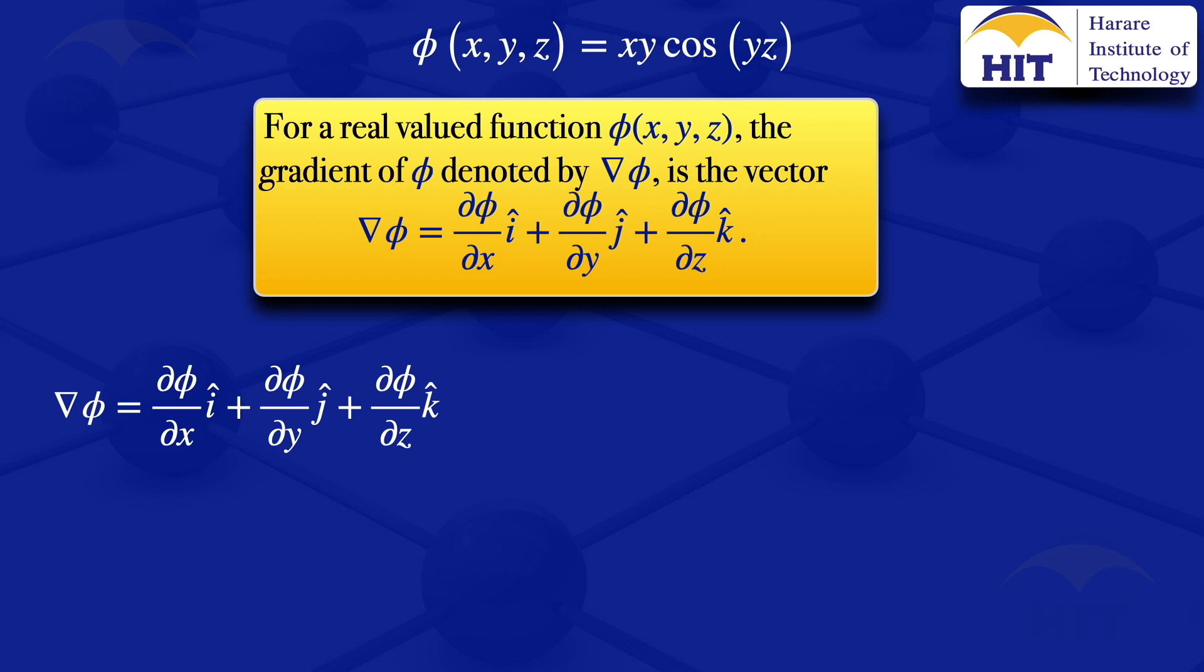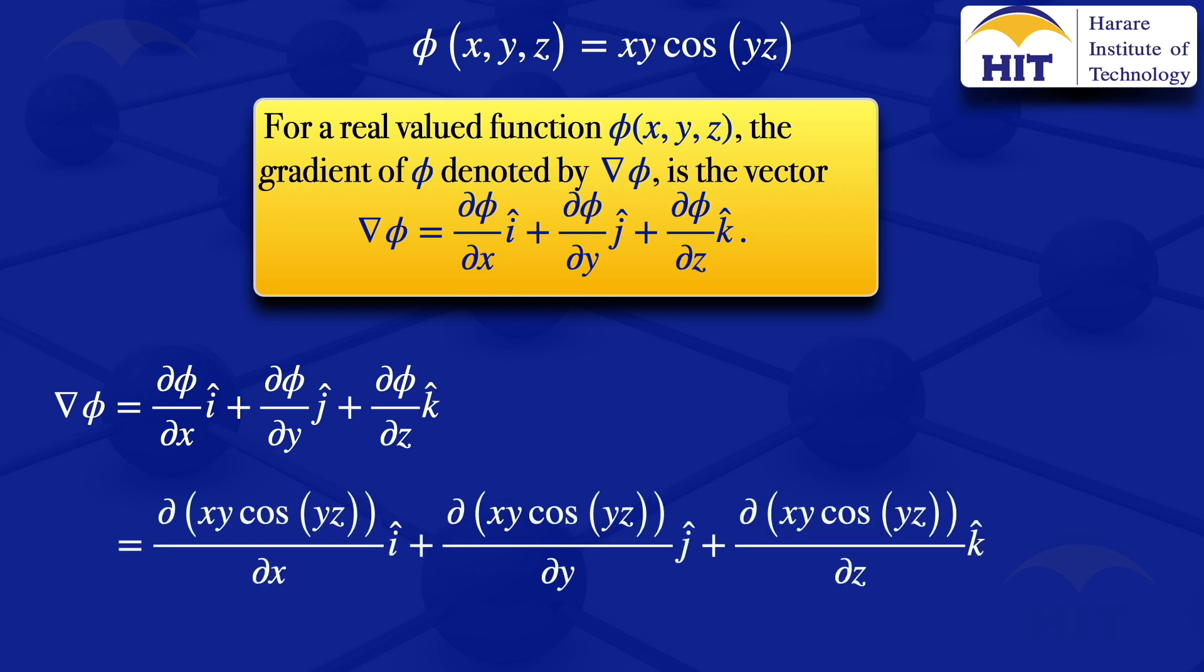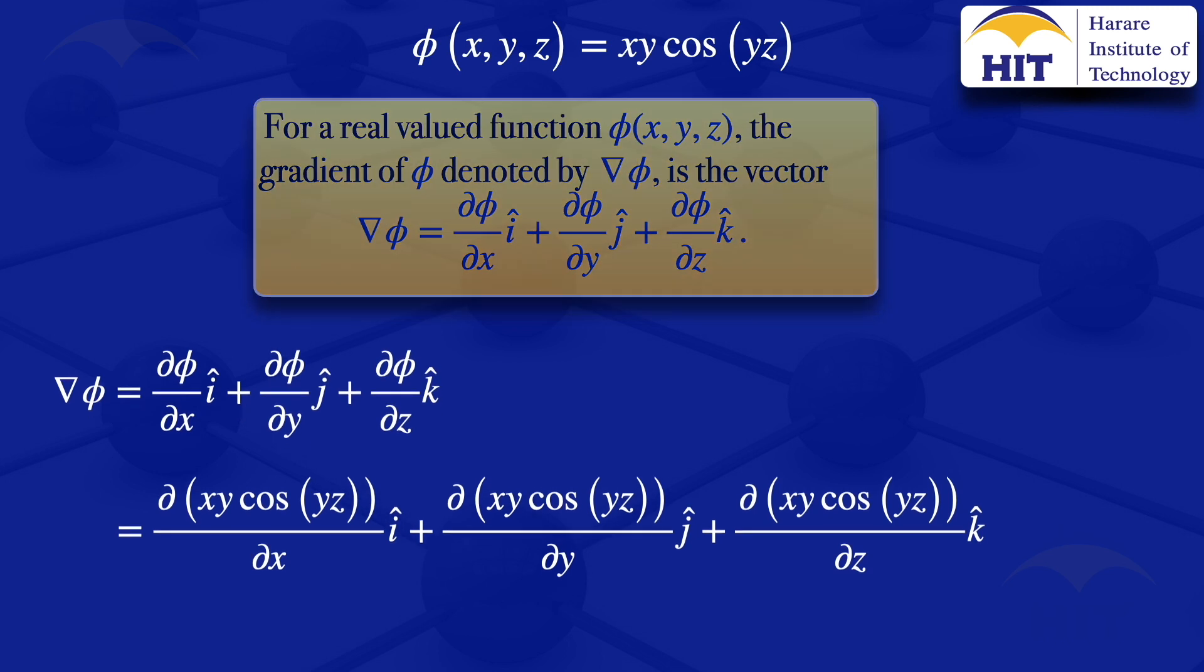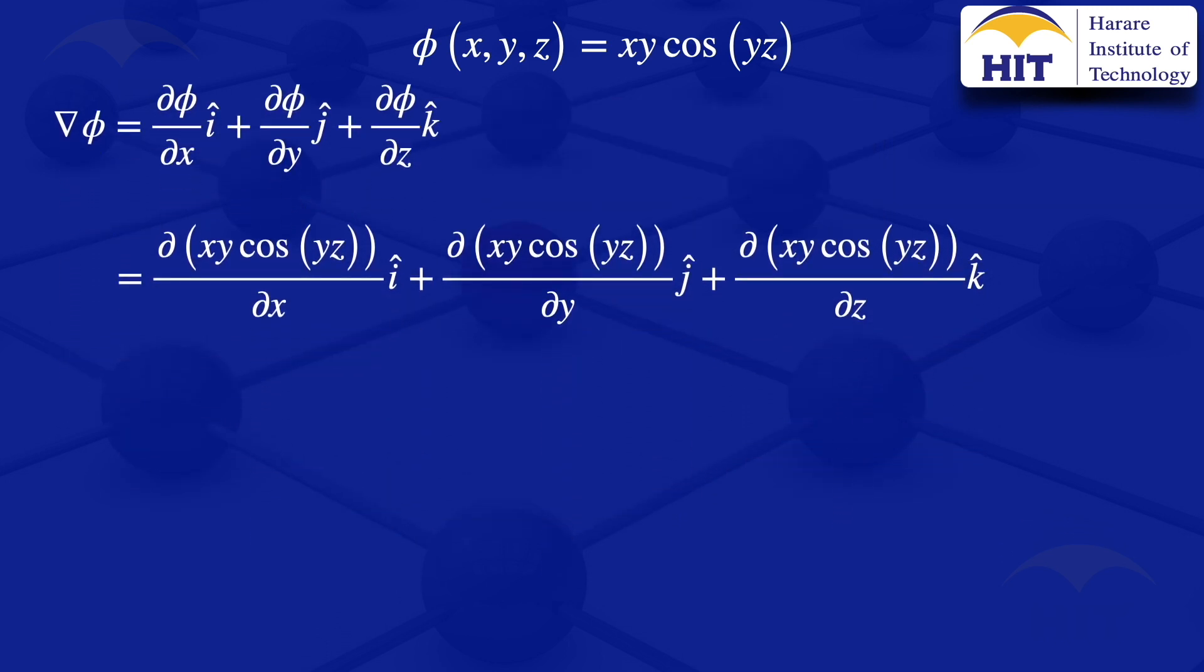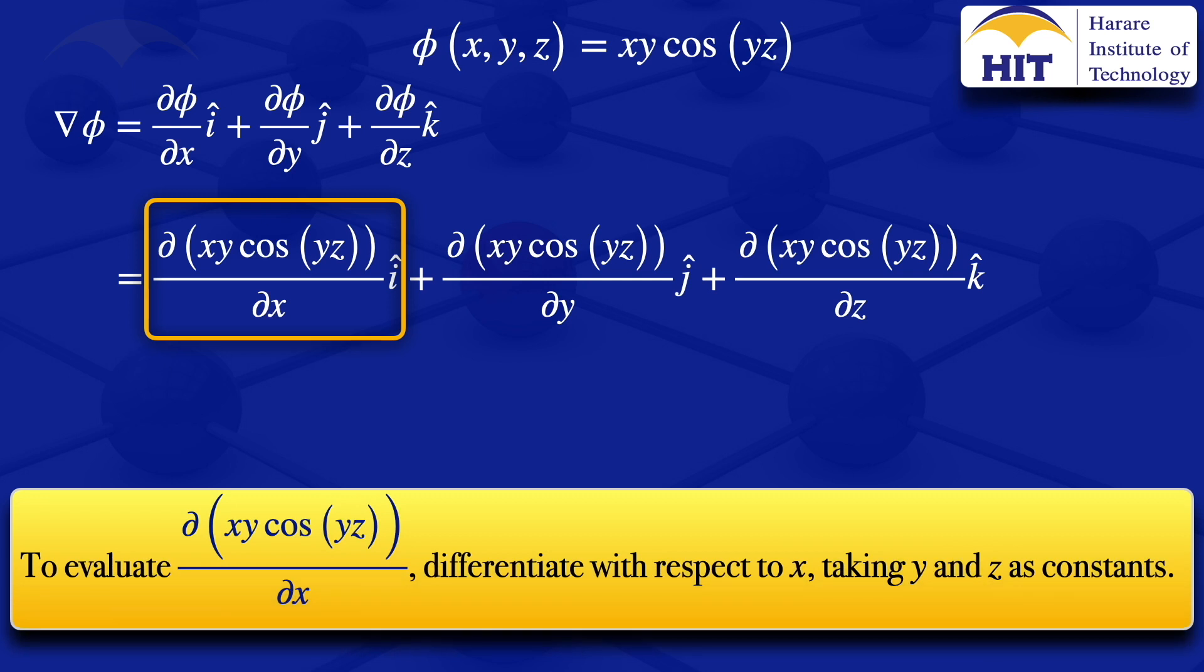I now go on and substitute the φ that we are given there into this expression so that we have the partial derivative of φ with respect to x i, partial derivative of φ with respect to y j, plus the partial derivative of the given φ with respect to z k. And the next step now is to evaluate those partial derivatives. So I'll start by looking at the first one here, the partial derivative with respect to x of xy cosine of yz. So what we do there is we differentiate with respect to x taking y and z as constants.